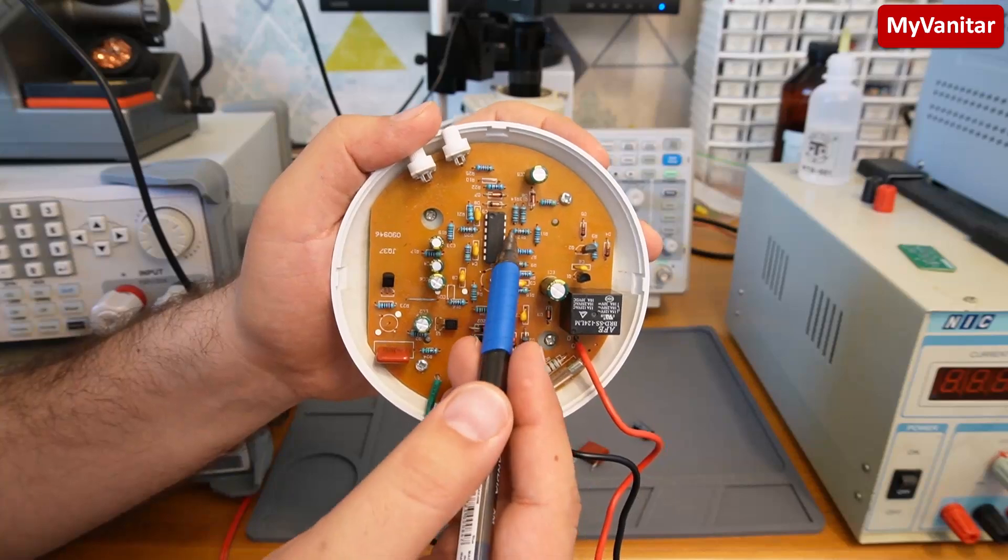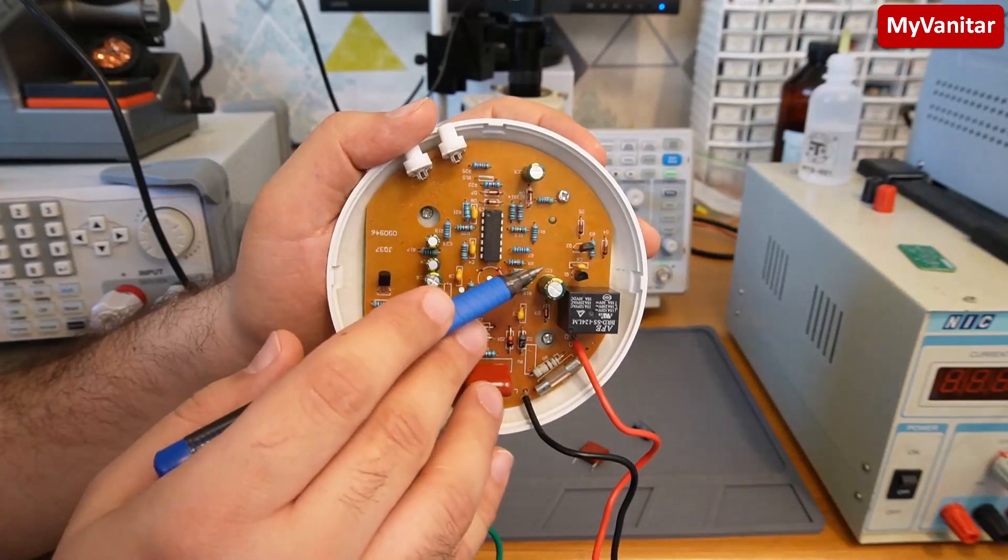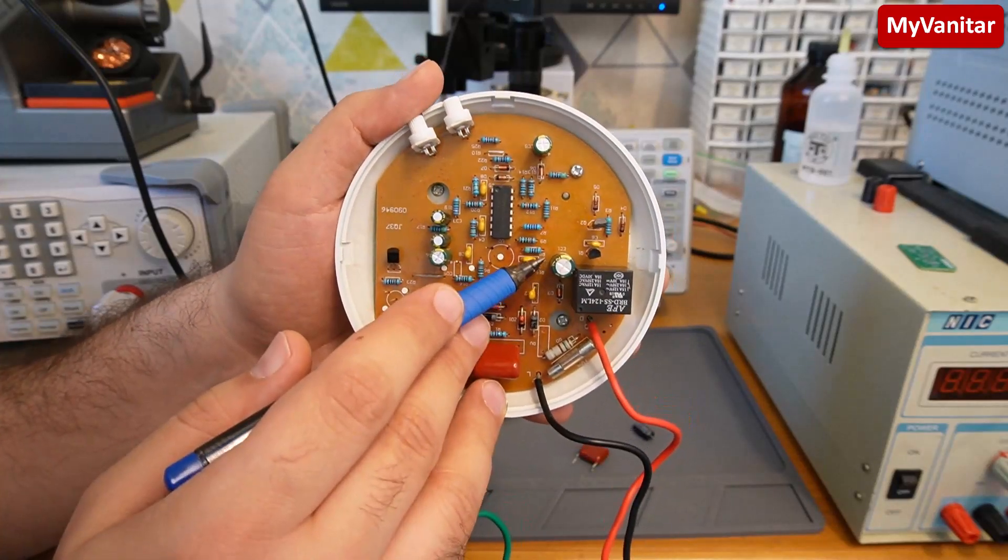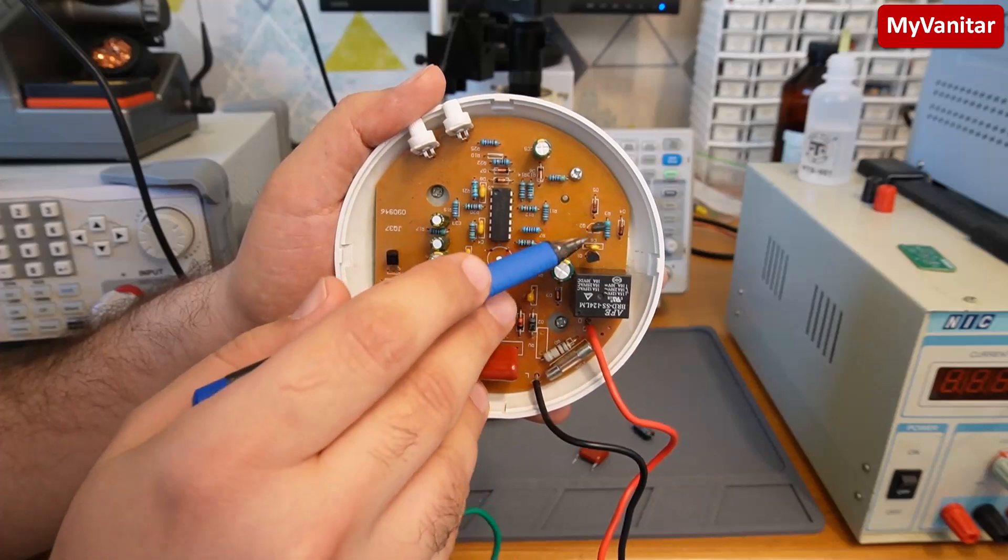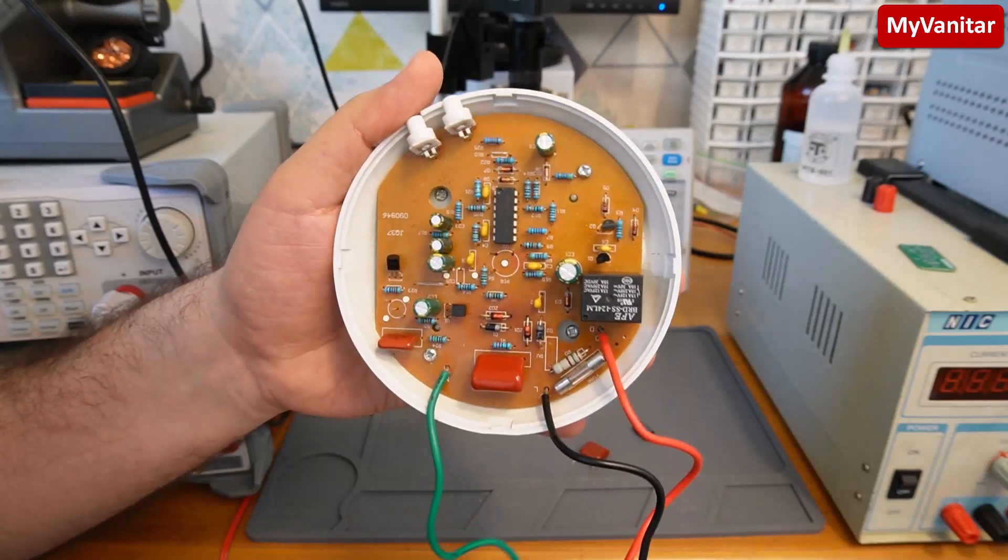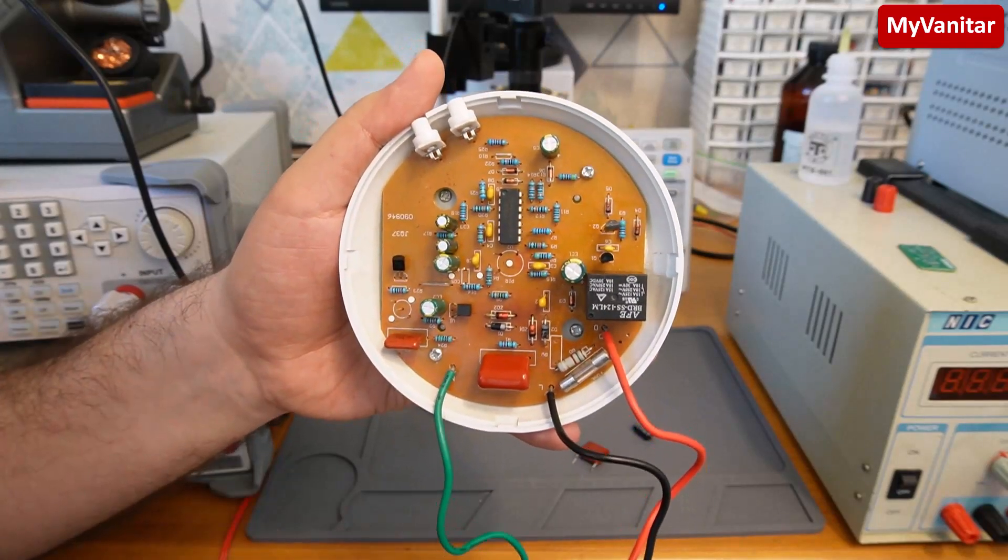So the op-amp activates the relay from this side. Or I can say provides an activation signal for the relay through these two transistors. I believe these two transistors are configured in the Darlington shape to enhance the current.